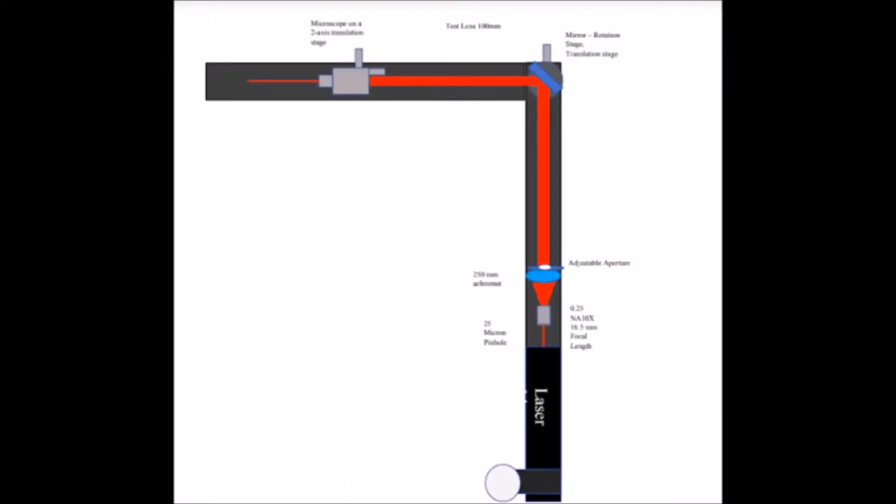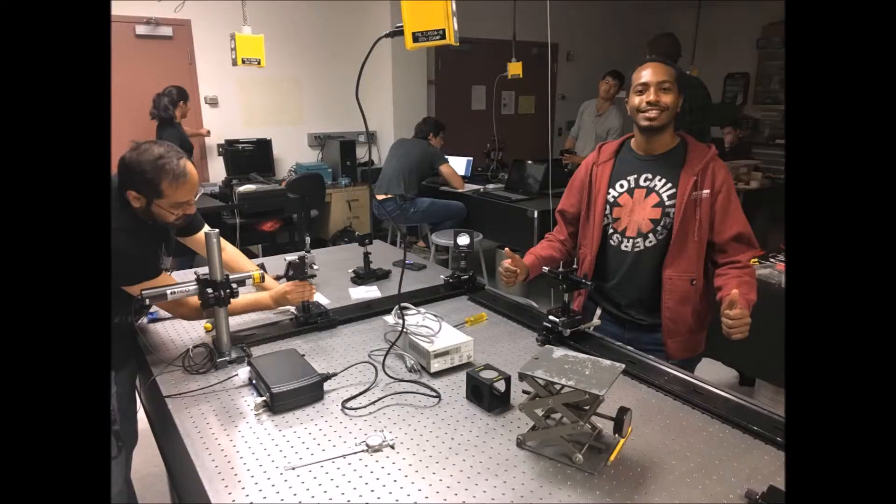To start the lab, a long and short rail were mounted to the optical table perpendicular to each other. A spatially-filtered collimated beam expander was then set up along the two rails using a mirror to fold the system 90 degrees. This was all performed using the standard procedures in the previous labs.